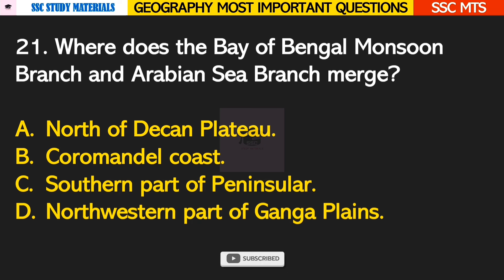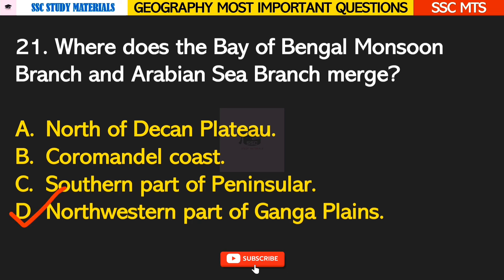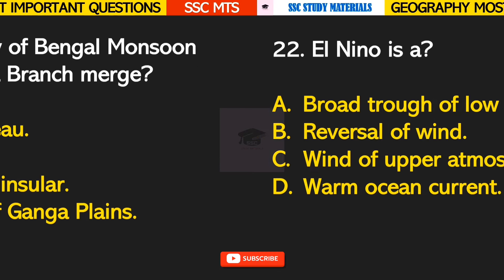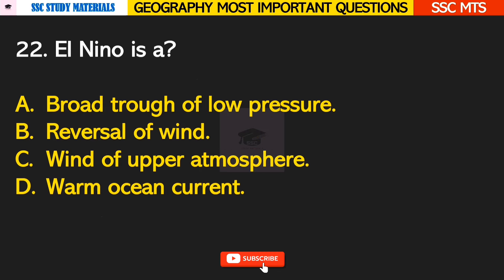Question number 21: where does the Bay of Bengal monsoon branch and the Arabian Sea branch merge? Answer D — they merge in the north-western part of the Ganga Plains.